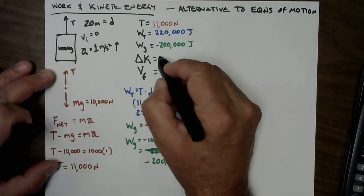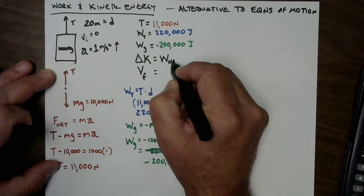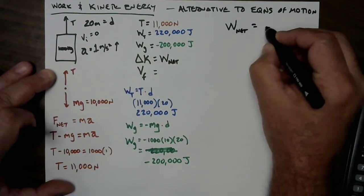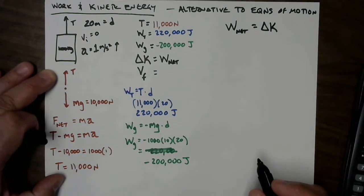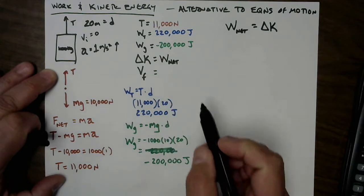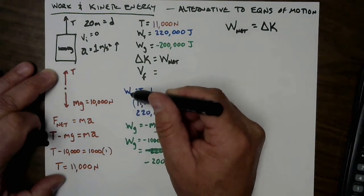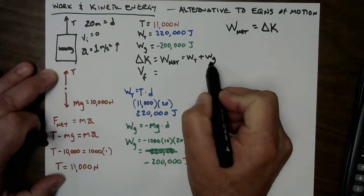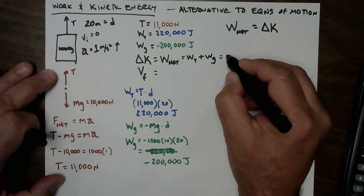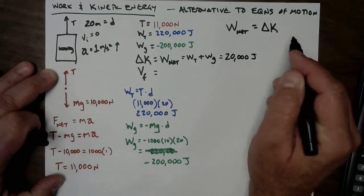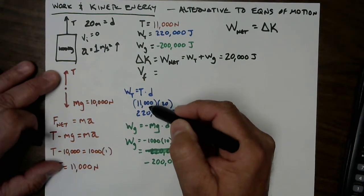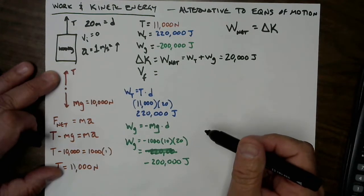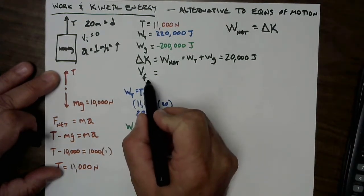The change in kinetic energy equals the net work done — that's the work-energy theorem. Net work is the sum of work by tension plus work by gravity: 220,000 plus negative 200,000 equals positive 20,000 joules. The tension's work almost entirely offsets gravity's, but that extra 20,000 joules goes into speeding up the elevator.